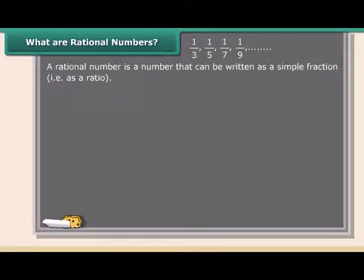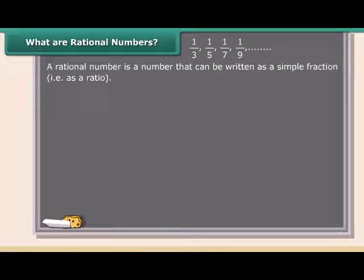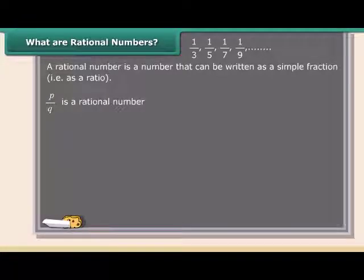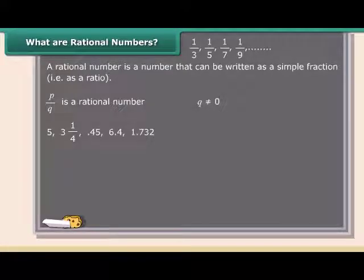A rational number is a number that can be written as a simple fraction, that is, as a ratio. So a rational number looks like P upon Q. Remember, Q cannot be equal to 0. All of these numbers shown are rational.